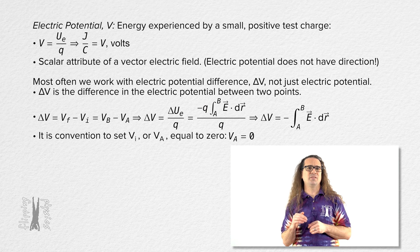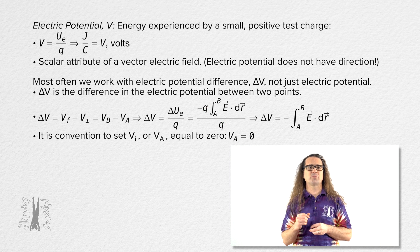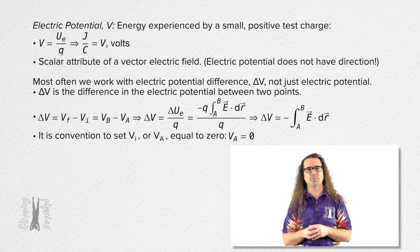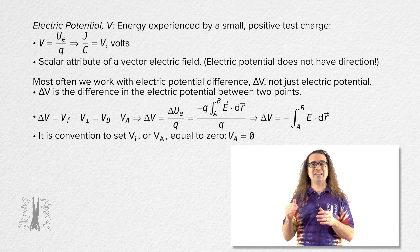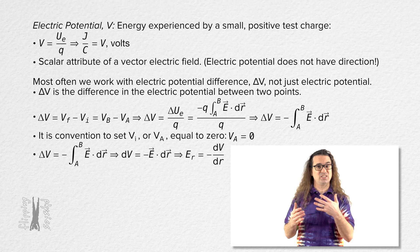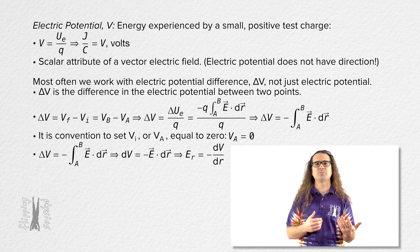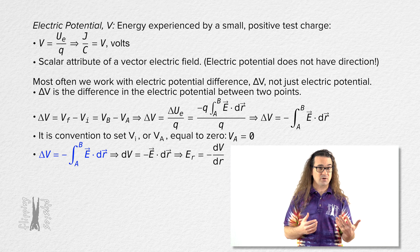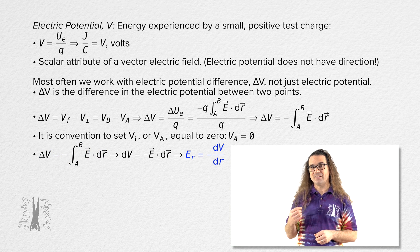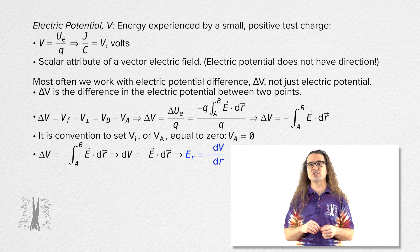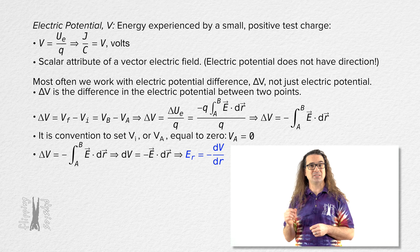We will often set the initial electric potential, or electric potential at point A, equal to zero. Notice we can now go in the opposite direction than we did at the very beginning of this lesson — we can go from the integral to the derivative — and we get that the electric field in the direction of r equals the negative of the derivative of electric potential with respect to r.